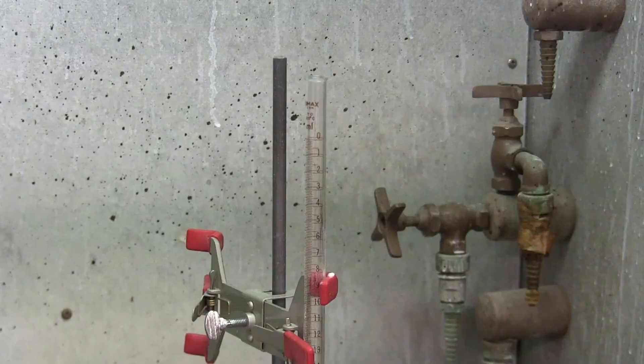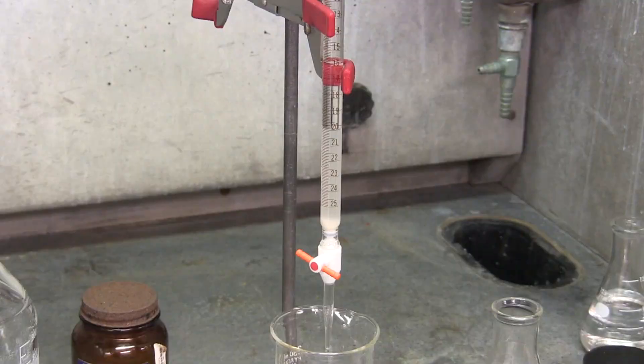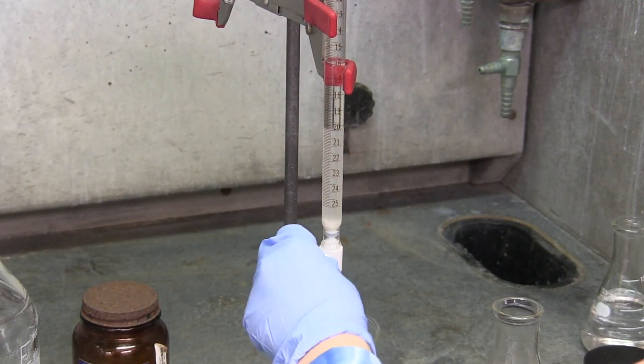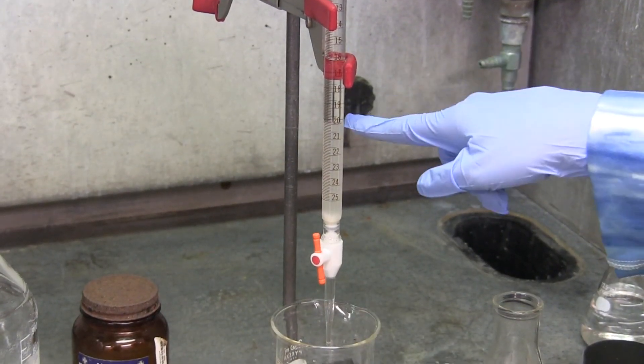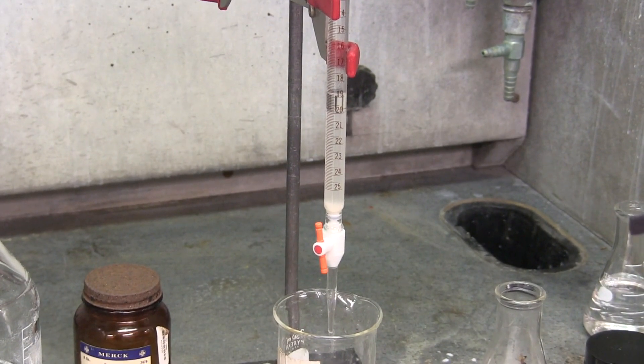The column is about 5 milliliters tall, as a too short column would not effectively separate the compounds and a too tall column would take too long for the elution. The stopcock is then opened so the solvent can drain to the top of the silica, and then closed.